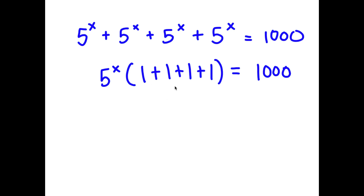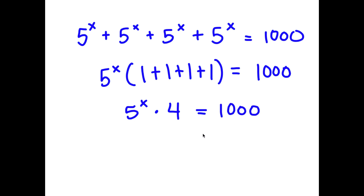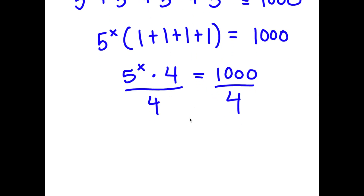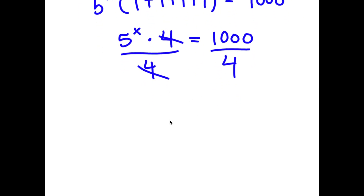If I simplify what's in the parentheses, 1 plus 1 plus 1 plus 1, that's 4. So I have 5 to the power of x times 4 is equal to 1,000. Now I can divide both sides by 4, so these two cancel out. And now I get 5 to the power of x is equal to 1,000 divided by 4, which is 250.